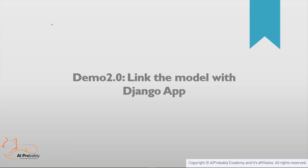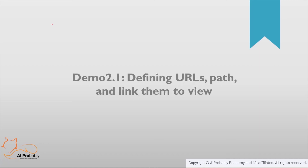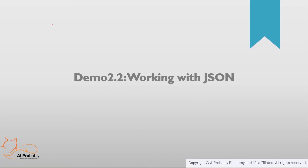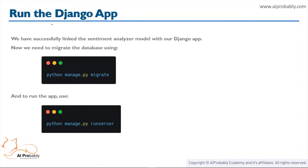The only thing remaining is running the Django app. Before doing that, run 'python manage.py migrate' to migrate the database — Django handles this automatically but it's an important step before deploying. After successfully migrating, run 'python manage.py runserver' to start the app.